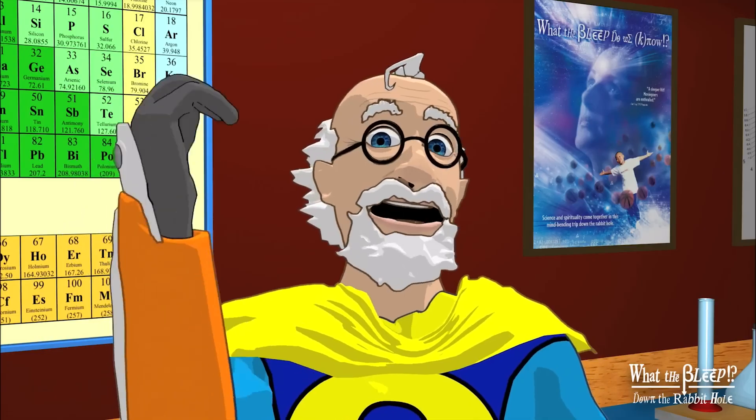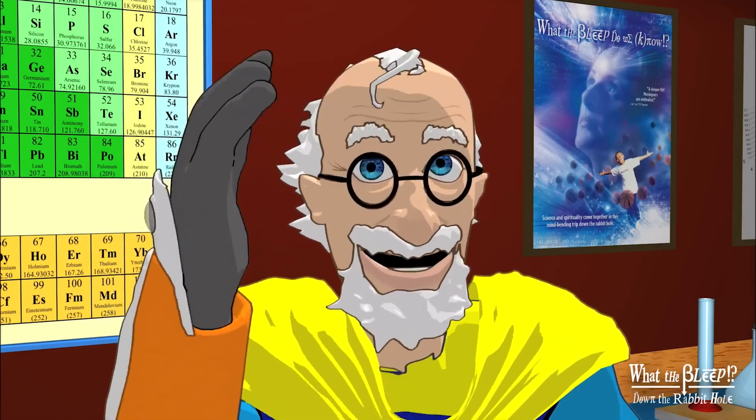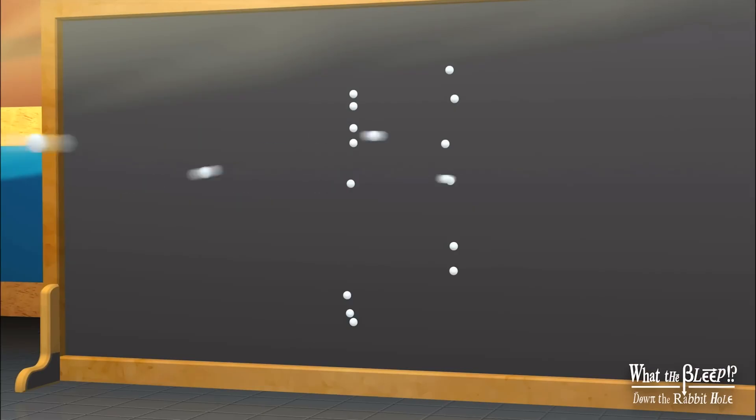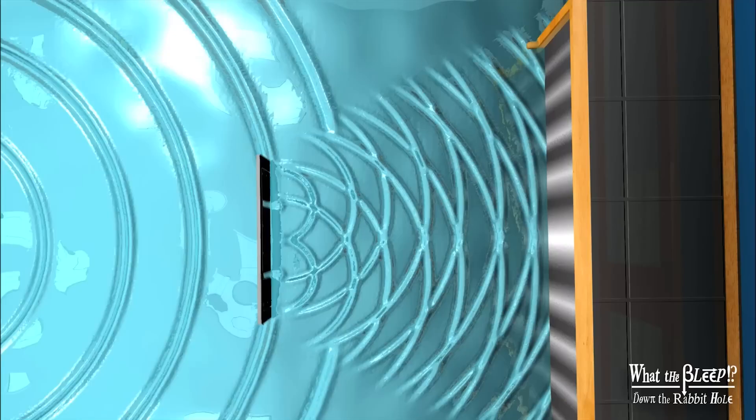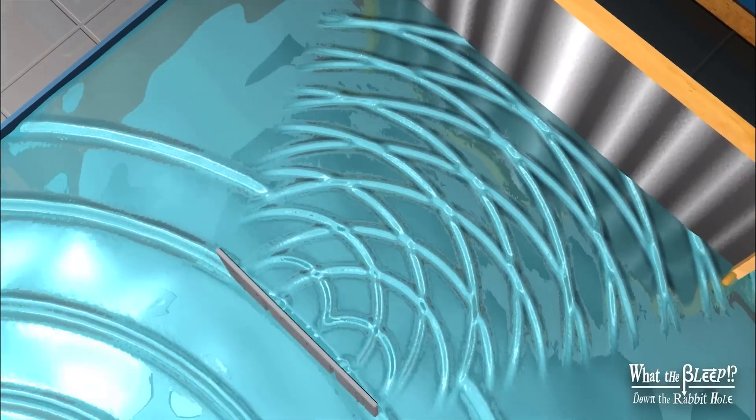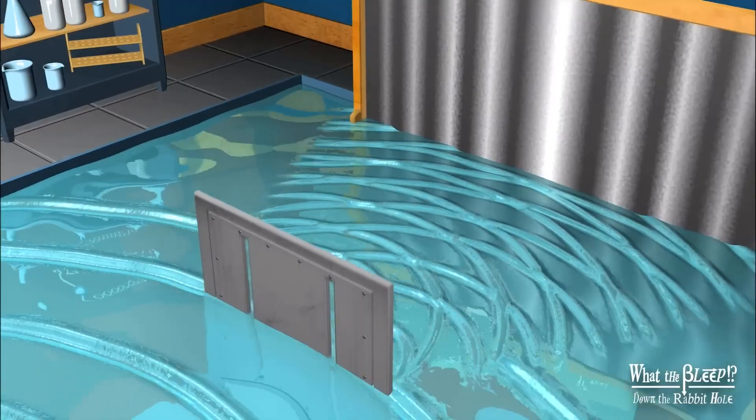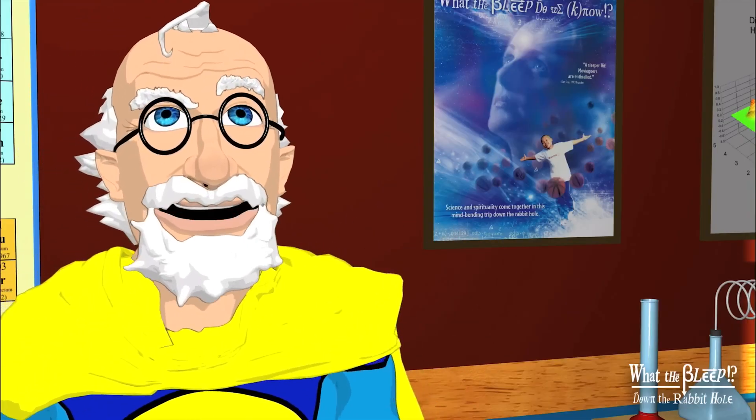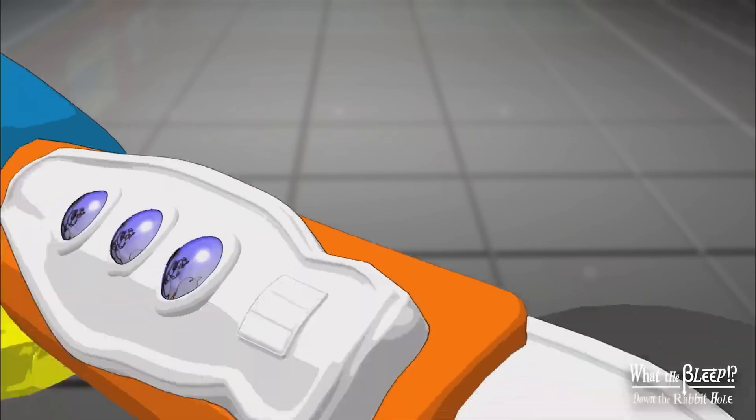When we throw things, that is matter, through two slits, we get two bands of hits. And with waves, we get an interference pattern of many bands. Good so far.